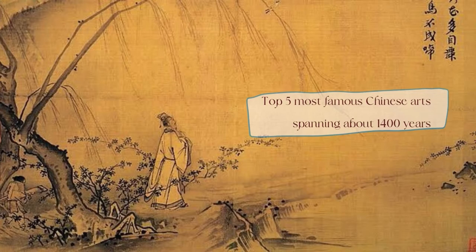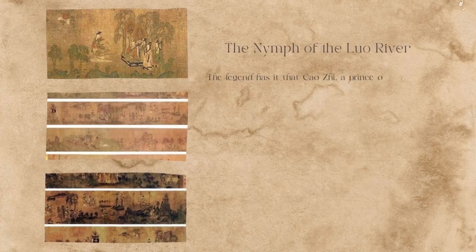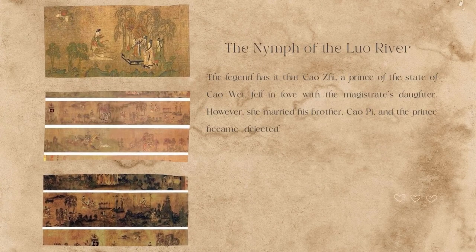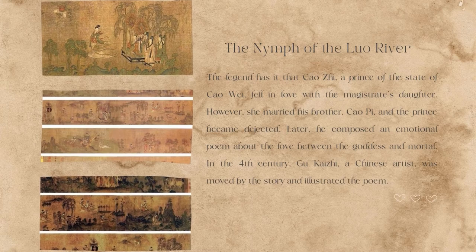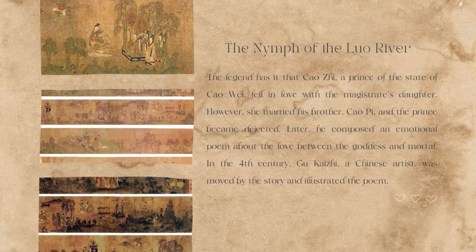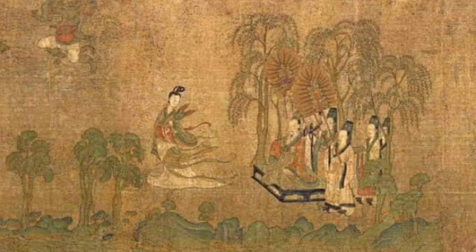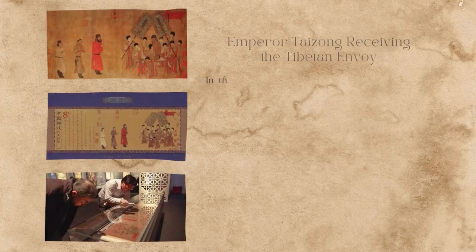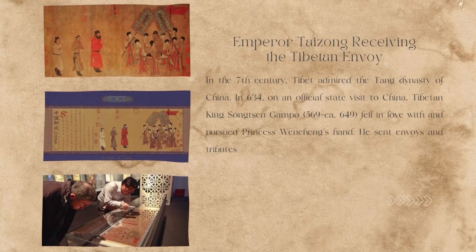Now, the top five most notable famous Chinese arts and artists, spanning about 1,400 years. The first is the Nymph of the Luo River. Legend has it that Cao Zhi, a prince of the state of Cao Wei, fell in love with a marquess's daughter; however, she married his brother Cao Pi, and the prince became dejected. Later he composed an emotional poem about the love between a goddess and a mortal. The fourth-century artist Gu Kaizhi was moved by the story and illustrated the poem.